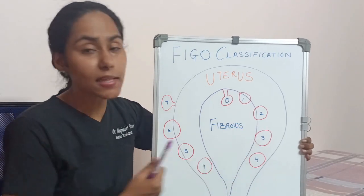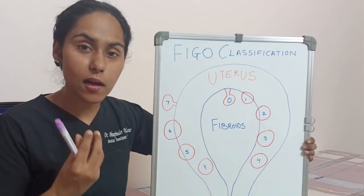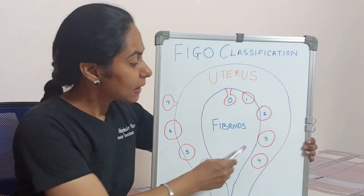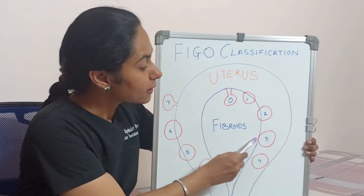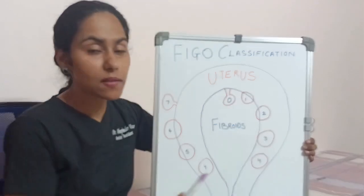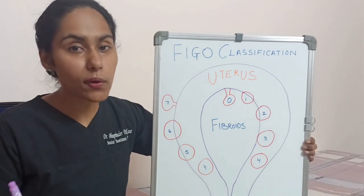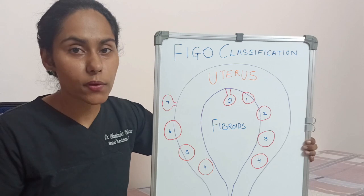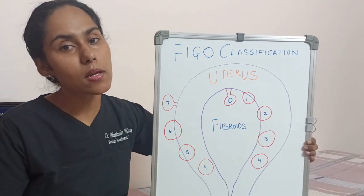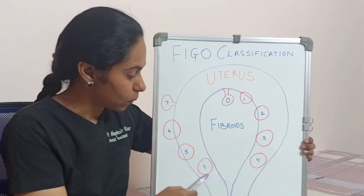Then we have type 3, which means the fibroid is totally intramural but has contact with the endometrium. Next is type 4, which is totally intramural — it has no contact with the endometrium and has no submucosal or subserosal component.